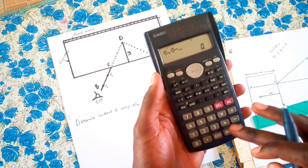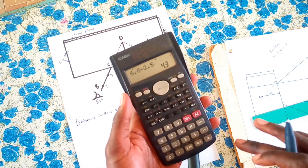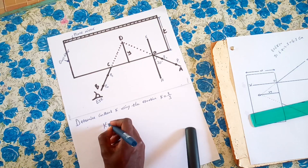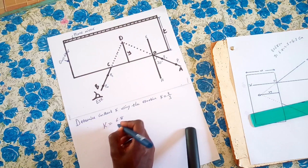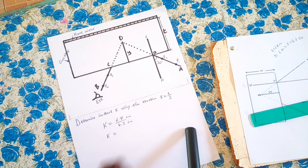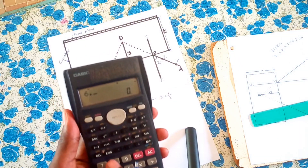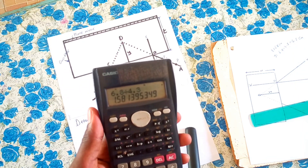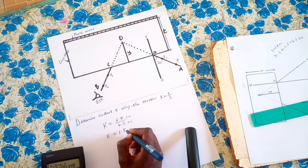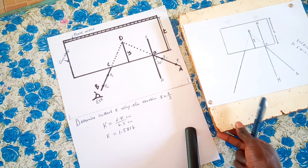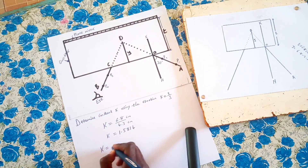6.8 minus 2.5 gives 4.3 cm. So constant K is given by T over Y — that is 6.8 cm divided by 4.3 cm, which equals 1.5814. The units cancel out, and that becomes the value of constant K.